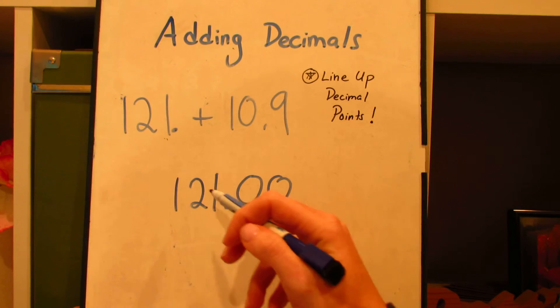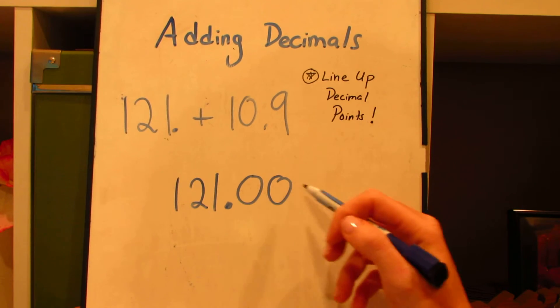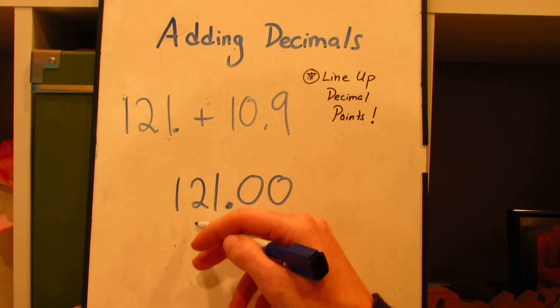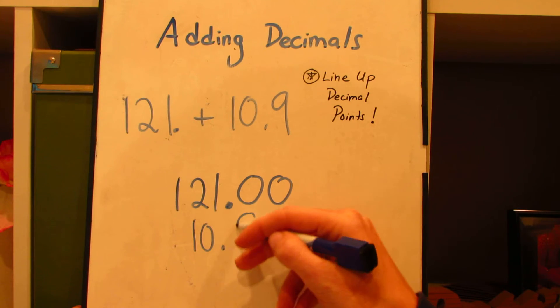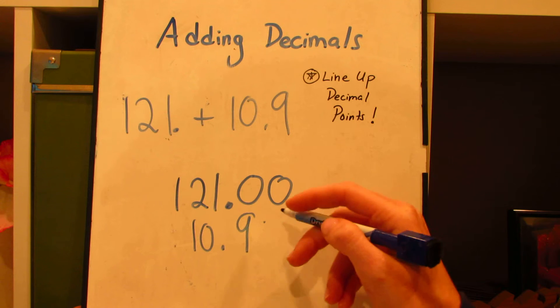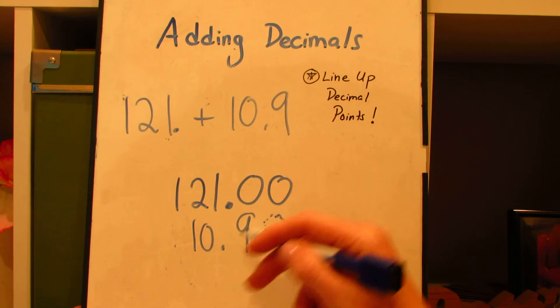So I'm going to add 121 dollars, 0 cents, and 10 and 9 tenths. Again, if I want to annex a 0 here to help me, I can.